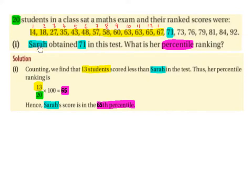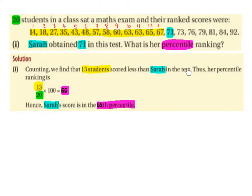Part 1. Sarah obtained 71 in this test. What is her percentile ranking? We can clearly see that 71 — Sarah's score — is right here, and counting, we find that 13 students scored less than Sarah in the test.